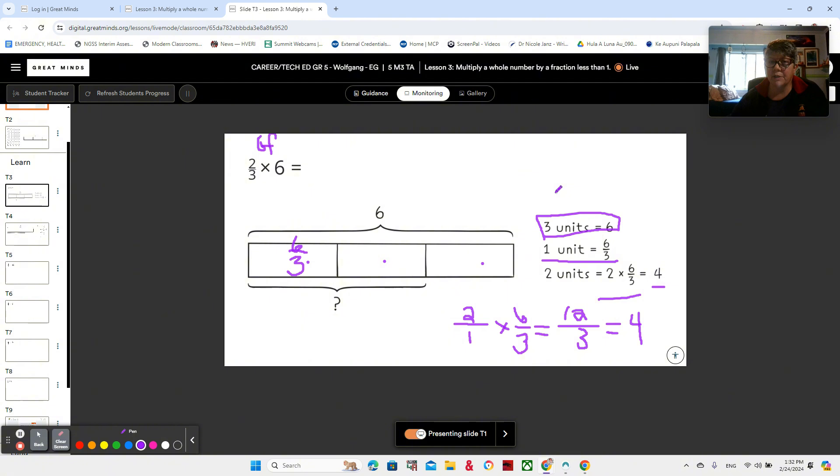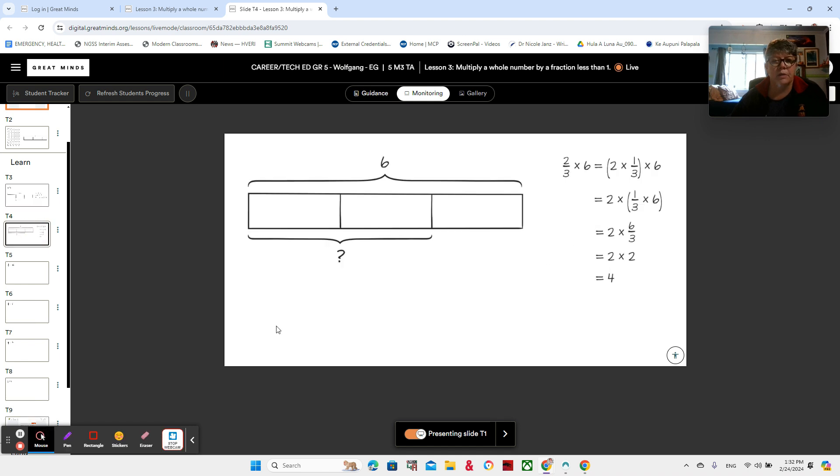Excellent job. And if you need to pause me, pause me now because I'm going to erase. All right. There is another way to show two thirds of six. And it's something we've been talking about a little bit, but let's just look at it formally with our tape diagram. Two thirds of six is the same as two times one third times six. Because two thirds is the same as two times one third.